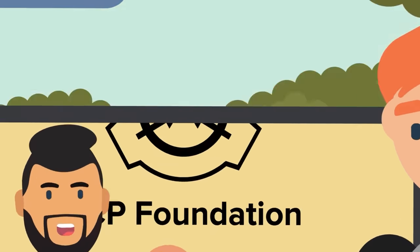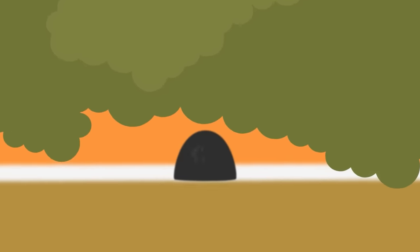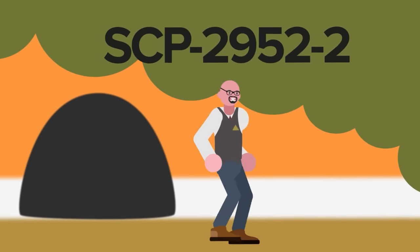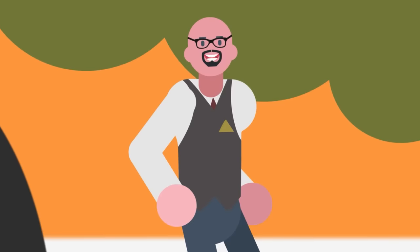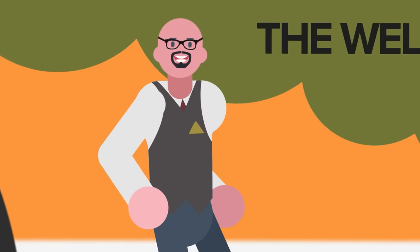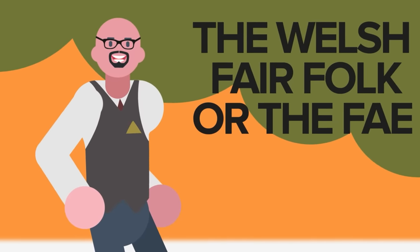When the openings appear, humanoid beings designated SCP-2952-2 will begin to exit the Corgi. For the sake of clarity, we'll refer to these little creatures as the Welsh Fair Folk, or the Fae.